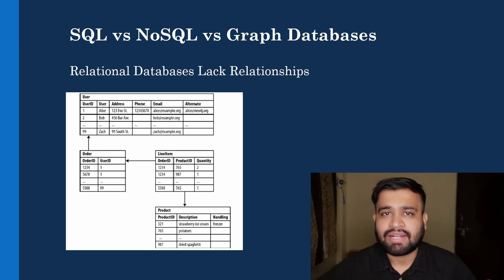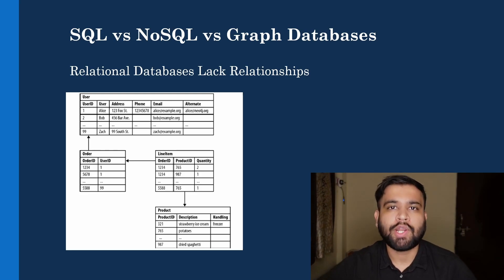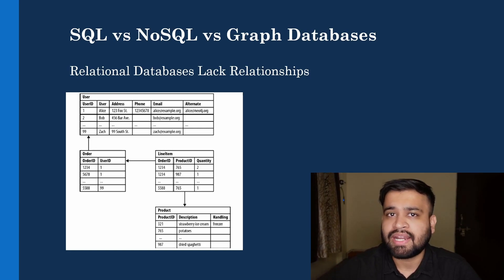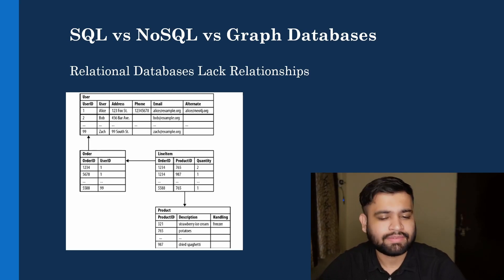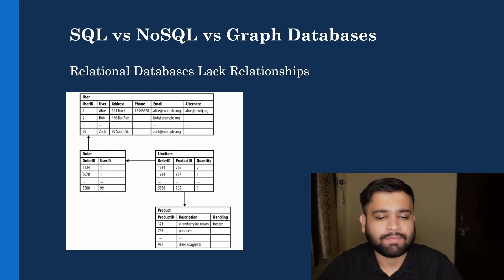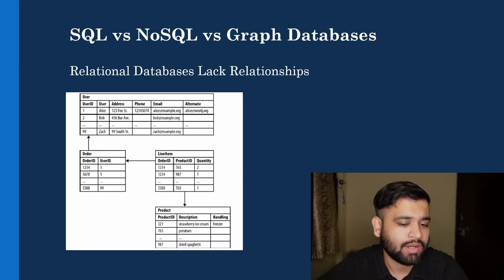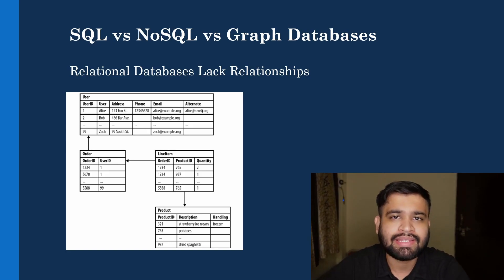In graph databases, data is connected — both nodes point to each other — which gives us the benefit of index-free adjacency. Let's discuss this with a simple example. We have a dataset of customers who purchased products, which is like a transactional-centric model.